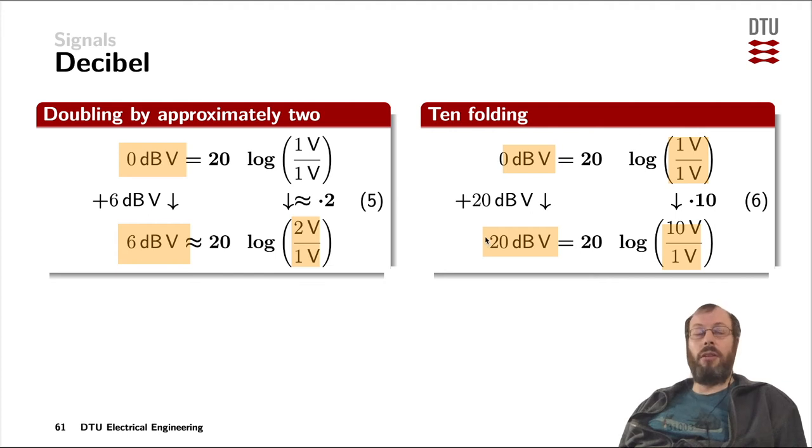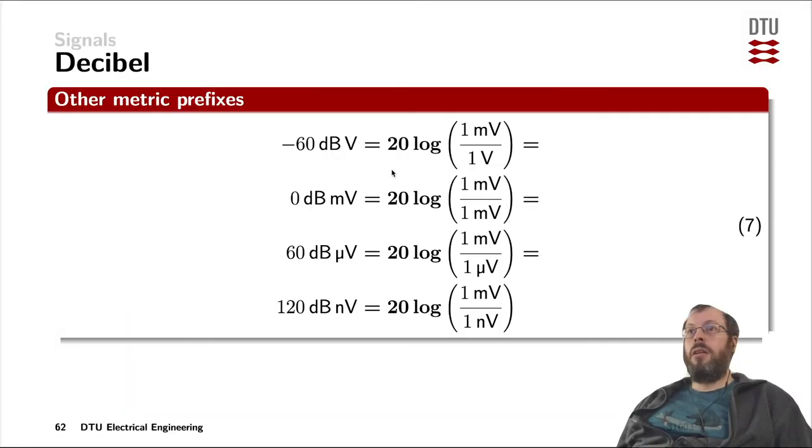Instead of using volts as the reference for the dB result, you could also use other units. If you would express one millivolt in dB volts, that would be minus 60. But if you represent the same one millivolt with respect to one millivolt, the result would be zero dB millivolts.